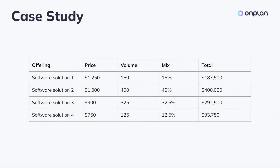For our case study, we present a SaaS business that has four software solutions. Each has a different price, a different number of units sold, and was introduced to the market at a different time. We set it up this way so that we can already expect that the contributions of each product in terms of price, volume, and mix will be different, as highlighted in this high-level overview of the company's performance in the first month.